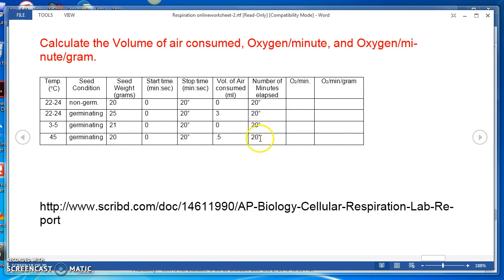And then filling out the table. For this last table, this is required. The information is required. I want you to fill in the column oxygen per minute and oxygen per minute per gram. For oxygen per minute, you understand from the lab that the volume of air is the same as the volume of oxygen.